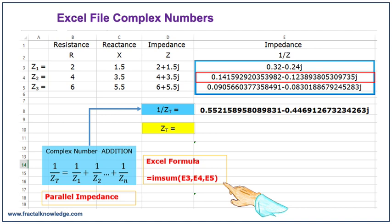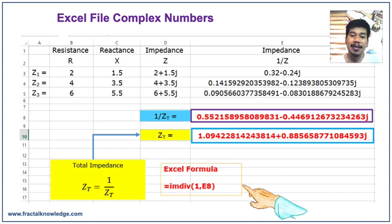We can now add the impedances. The Excel formula is equals IMSUM, open quantity, move cursor to E3 comma E4 comma E5, close quantity, enter. We have a value of 0.55215 minus 0.444691j. We need to inverse it to get the impedance Zt. To do that, let us use the Excel formula equals IMDIV, open quantity, type 1 comma, move the cursor to E8, close quantity, enter. We've got 1.0942 plus 0.88565j.